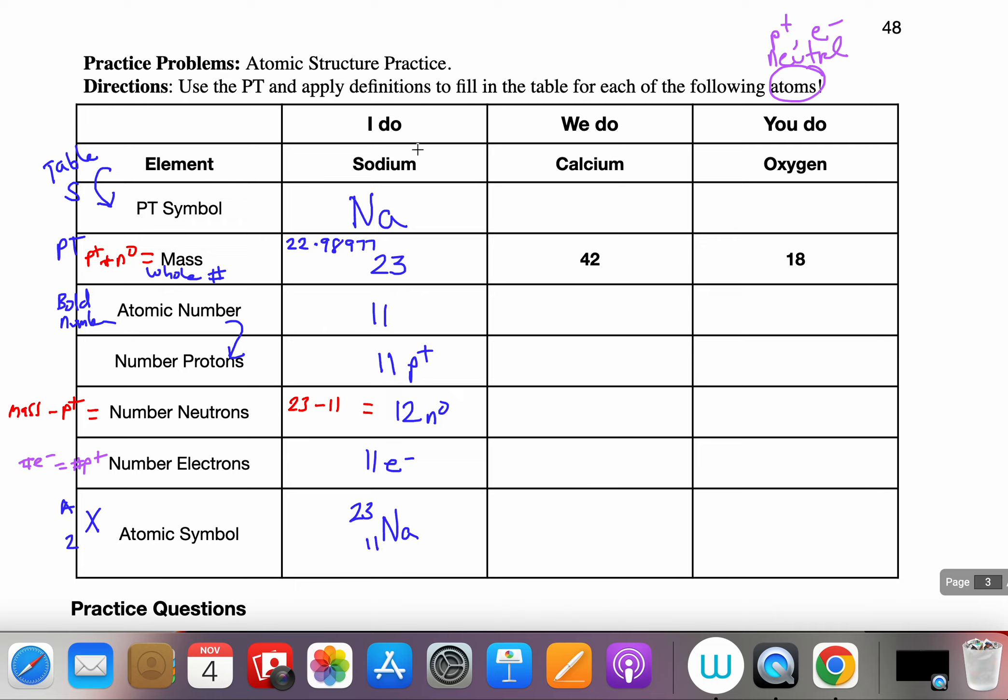Working through this I'm going to work through the we do, calcium. So I look on table S, I find the word calcium and next to it I see the symbol is capital C lowercase a. Now I look here and I'm given this mass value of 42. And when I look on the PT, so I look on the periodic table Ca's position, I see there's a mass of 40.08.